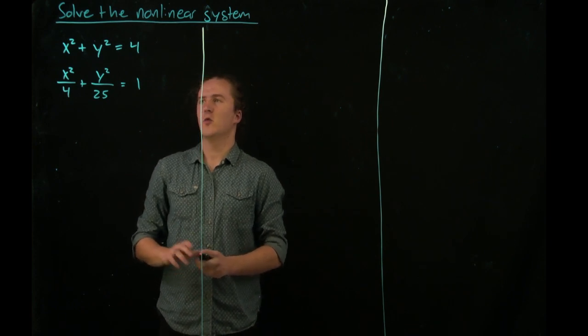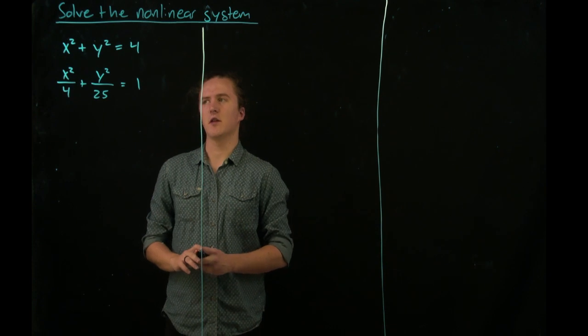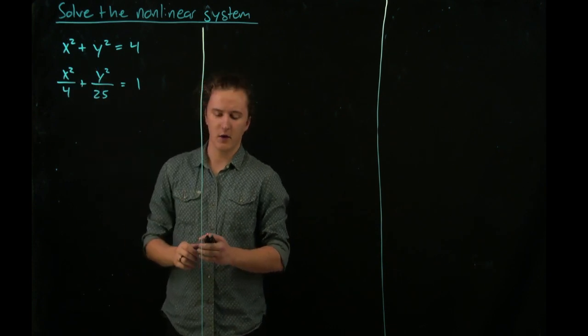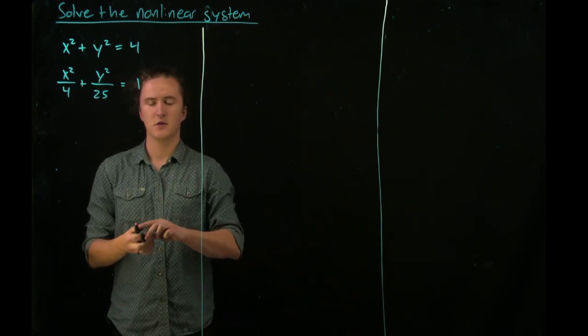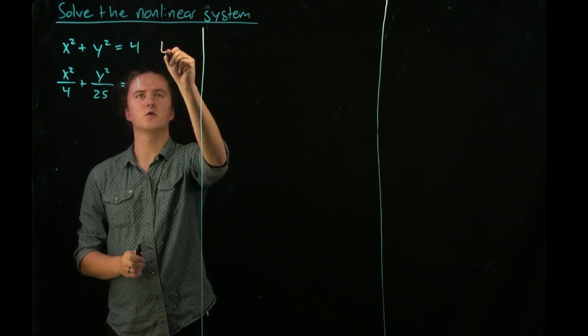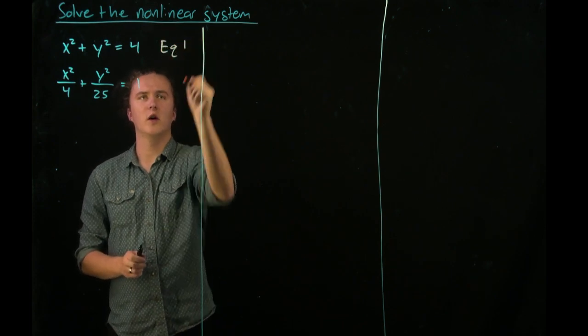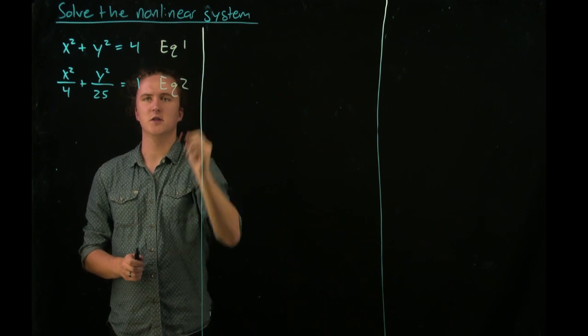To do so, we know that we can add multiples of equations together with the goal of getting rid of one of the variables. So let's name our first one equation 1 and our second one equation 2.